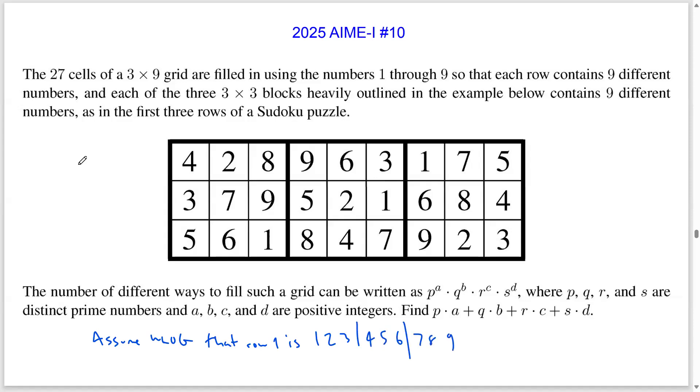The idea behind this is that each permutation of 1 through 9 is going to give the same number of different ways to fill in the grid. So we can fix the first row and just multiply by 9 factorial in the end.